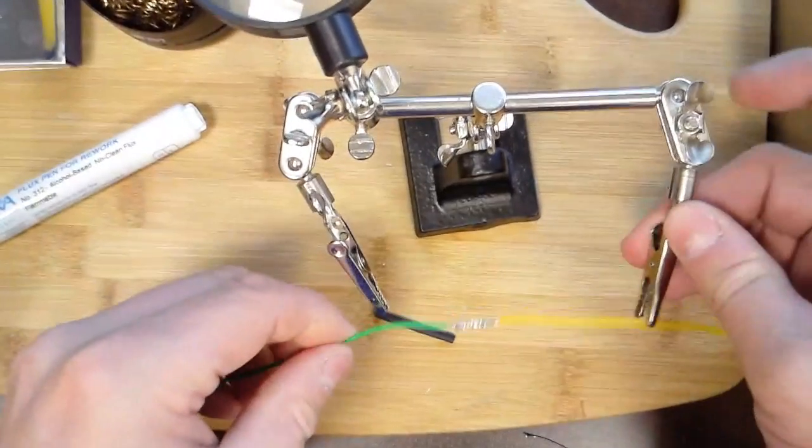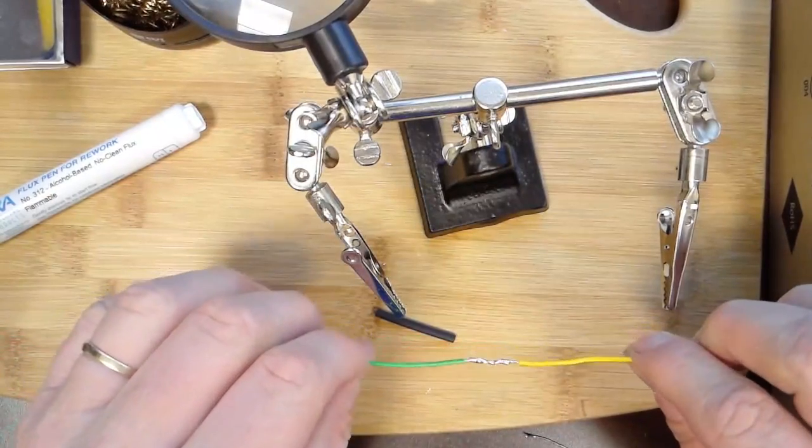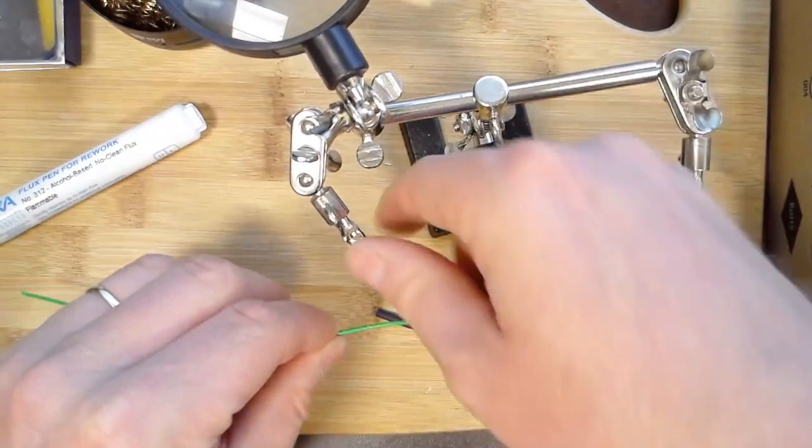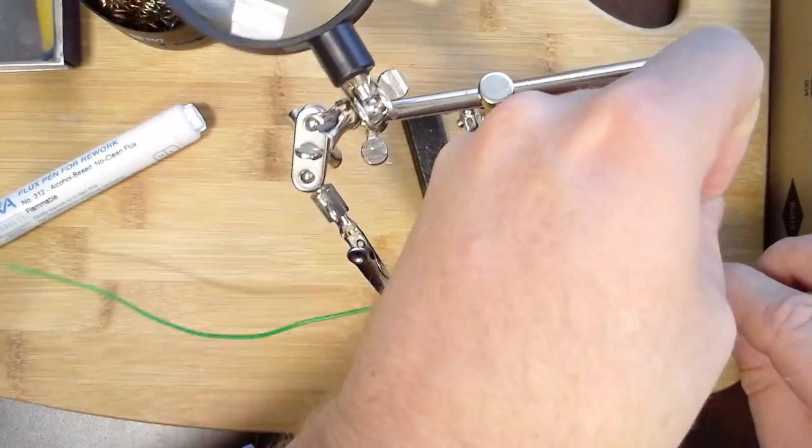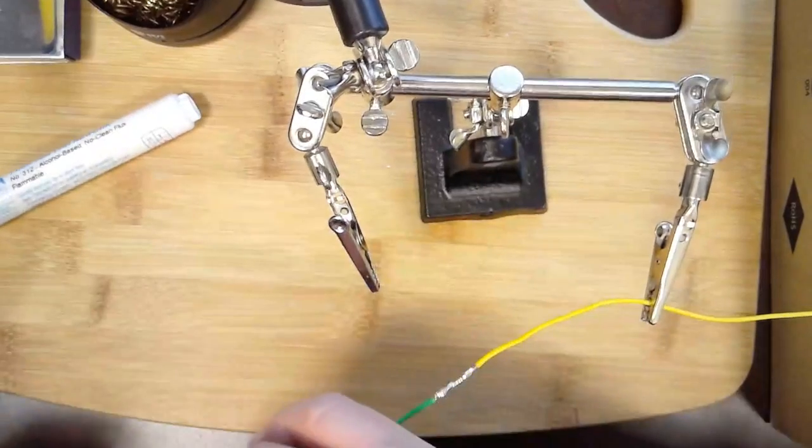That flux helped it just really flow nicely around. All right, next step, I'm going to put on the shrink wrap tubing and take it over the top and try to center it.